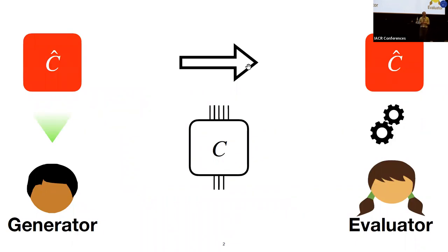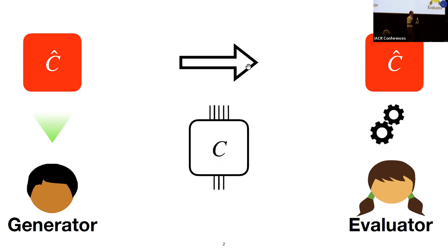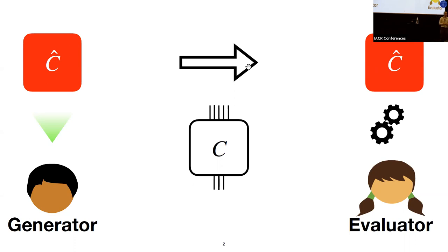First, a reminder about the basic execution of a garbled circuit, and we'll analyze how we're trying to play with some of the parameters. In a garbled circuit we have two parties: a generator, who takes the circuit and makes a garbling of it, and an evaluator who runs it. There are basically three steps: generate the circuit, send it across the network, and evaluate it. Traditionally, parties pay linear costs in all three of these steps.